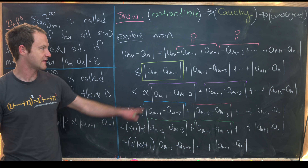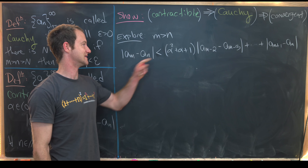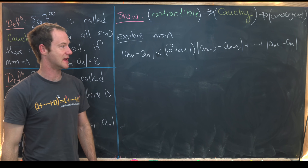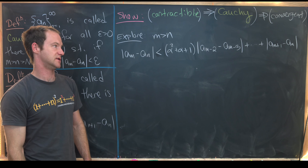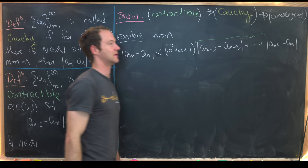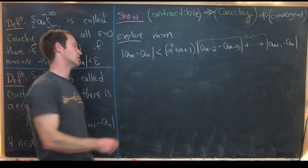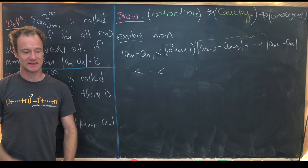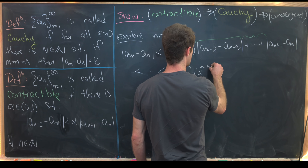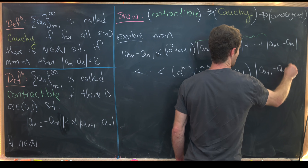Continuing to apply the contraction to all terms except the last one, we eventually get that |a_m - a_n| is less than (alpha^{m-n} + alpha^{m-n-1} + … + alpha + 1) times |a_{n+1} - a_n|. This is the fully iterated result of repeatedly applying the contraction inequality.